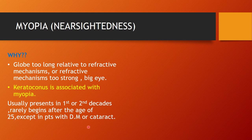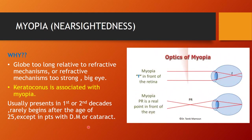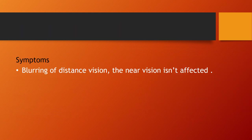Myopia is opposite to hypermetropia — the globe is too long relative to the refractive mechanism, or the refractive mechanism is too strong. Myopic eyes are mostly big eyes. Patients often come from myopic families where parents are aware of the condition. Optically, the image is formed in front of the retina.